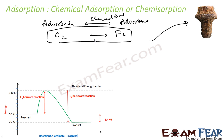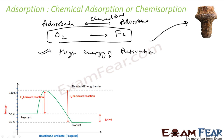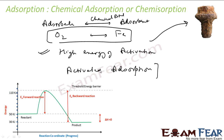Since chemisorption involves a chemical reaction, there is an energy barrier. It involves high activation energy — you can refer to the previous chapter video for the activation energy concept. Because it involves high activation energy, it is also called activated adsorption.